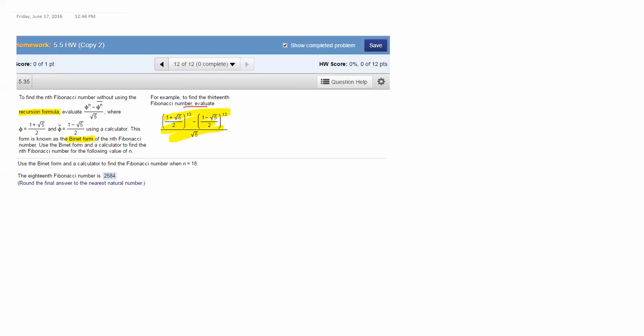1 plus the square root of 5 divided by 2 raised to the 13th power minus 1 minus the square root of 5 divided by 2 raised to the 13th power. That difference is divided by the square root of 5 and then that should give us the 13th number in the list.